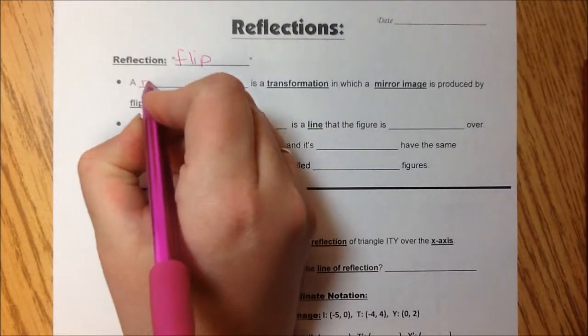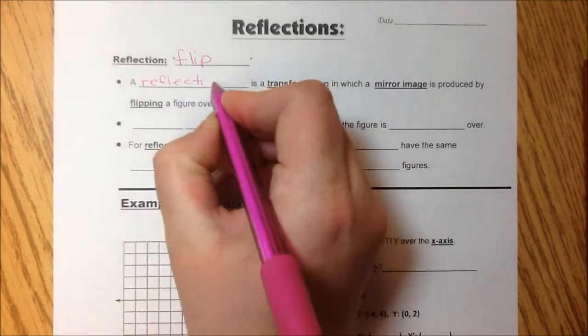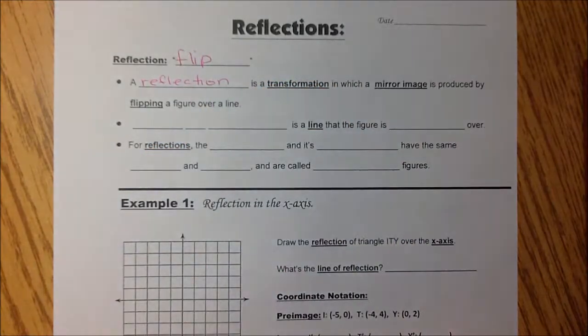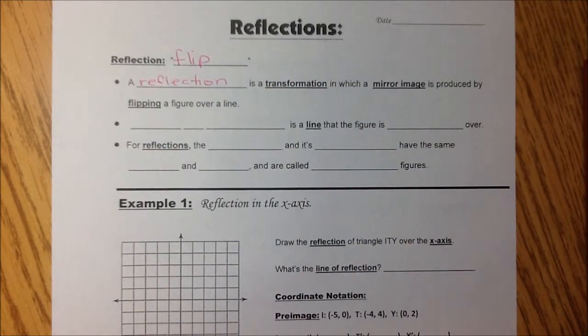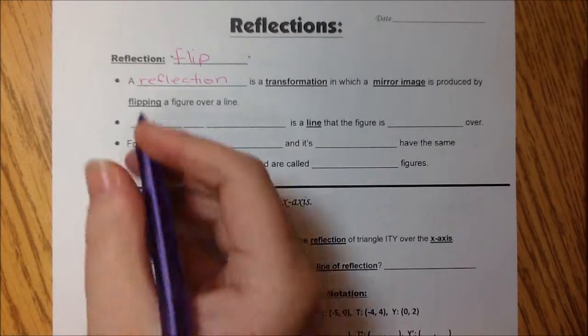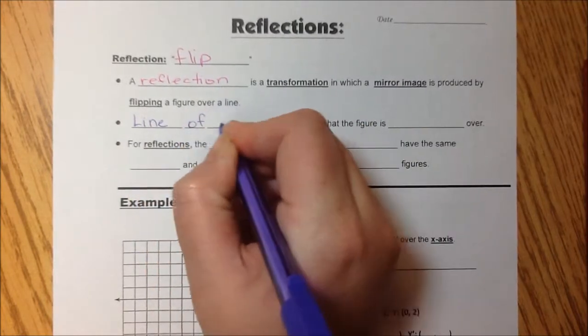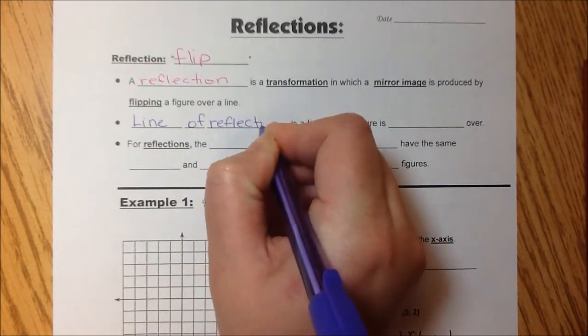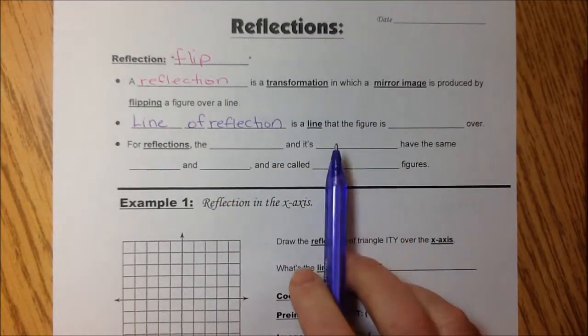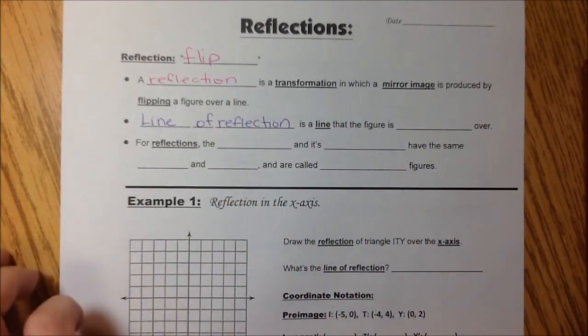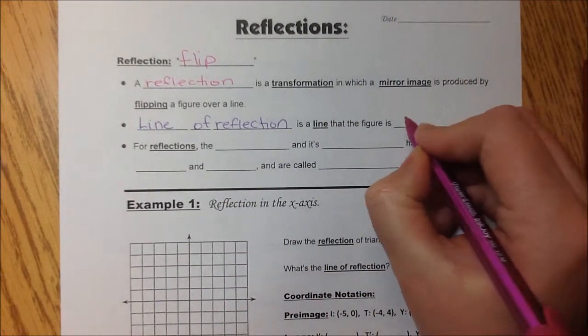A reflection is a transformation in which a mirror image is produced by flipping a figure over a line. Purple. The line of reflection is a line that the figure is flipped over.